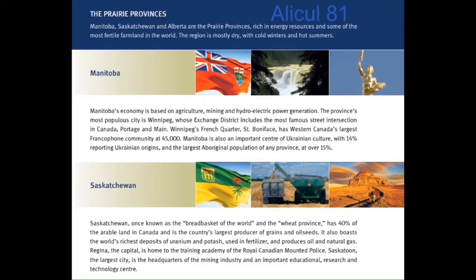Prairie Provinces. Manitoba, Saskatchewan and Alberta are the Prairie Provinces, rich in energy resources and some of the most fertile farmland in the world. The region is mostly dry, with cold winters and hot summers.